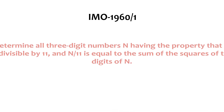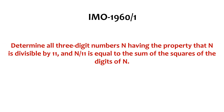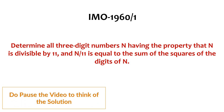Hi, today we are going to solve the first question from the 2nd International Maths Olympiad held in 1960. The question goes like this: determine all three-digit numbers n having the property that n is divisible by 11, and n divided by 11 is equal to the sum of the squares of the digits of n. The question sounds interesting — do pause the video to think of the solution yourself, because now I am going to lead you towards the solution.